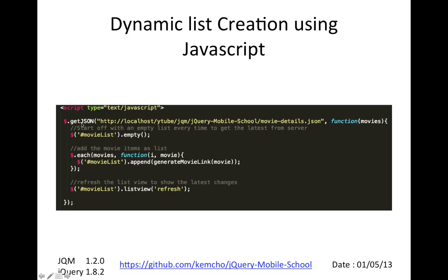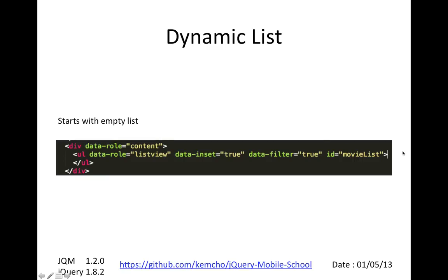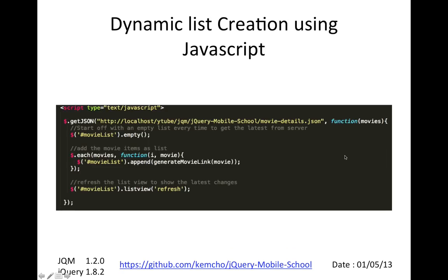We use the getJSON method from jQuery, passing it the URL which has the dynamic JSON object. Then we iterate over each of the movie items and create an anchor tag — a link — for each movie. We reference the movie-list ID that we gave the empty list to populate it by iterating over all of these objects. There's a function called generateMovieLink which creates the list item link. Once we've added all the movies, we do a refresh on the list view because it's dynamically added, so all the jQuery Mobile CSS and JS behavior needs to be applied.